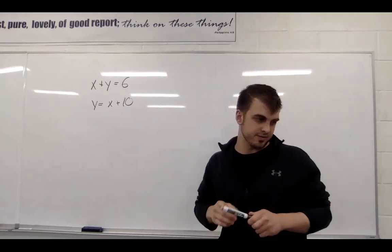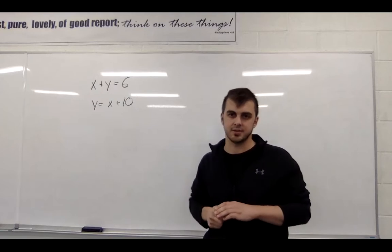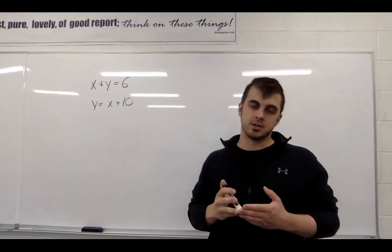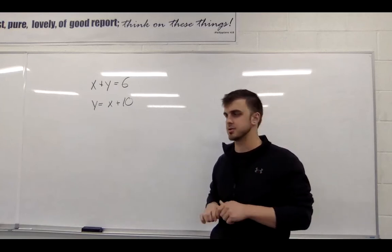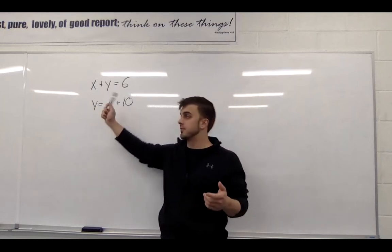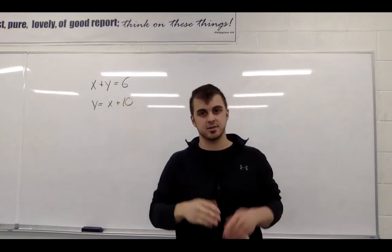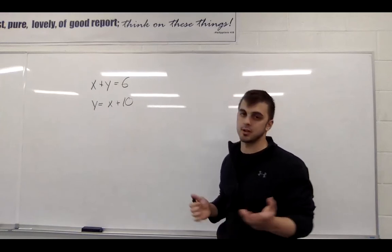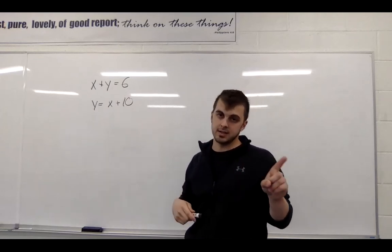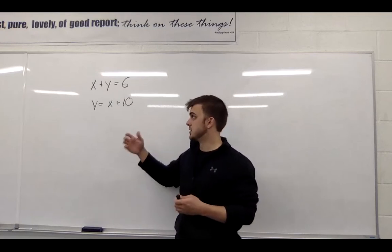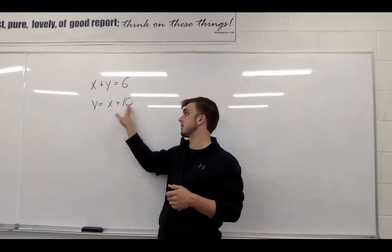So if you're on page 594, Theo is thinking of two numbers and he gives two hints. The first hint is that the sum of both numbers together equals 6. The second hint is that one number is 10 more than the other number. So if one number is y, that means y is 10 more than x, which is y equals x plus 10.